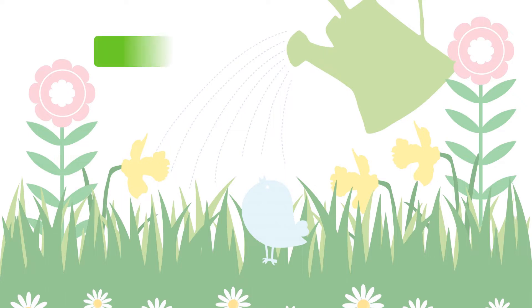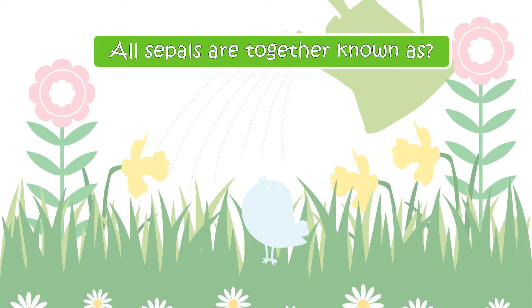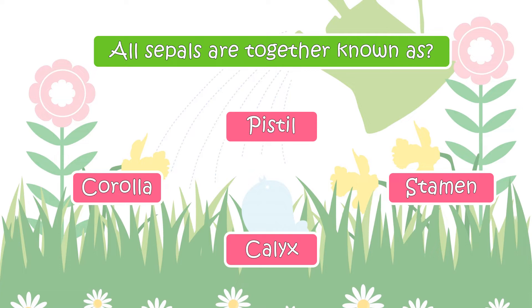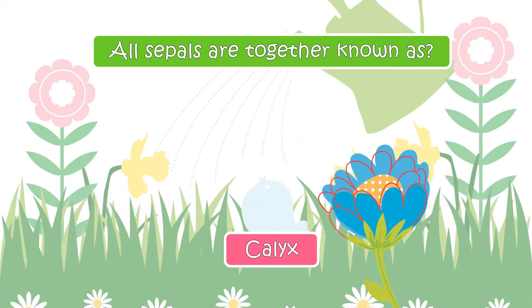The next question is: All sepals are together known as? Your options are Corolla, Pistil, Stamen, or Calyx. The right answer is Calyx.